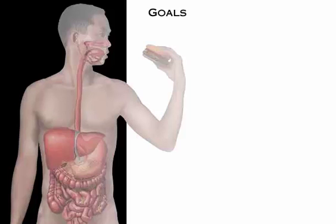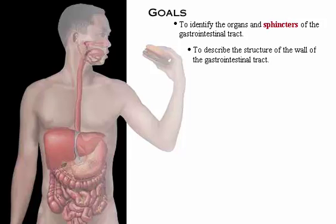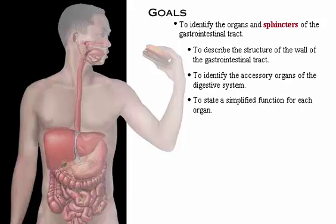Your goals for learning are to identify the organs and sphincters of the gastrointestinal tract, to describe the structure of the wall of the gastrointestinal tract, to identify the accessory organs of the digestive system, and to state a simplified function for each organ.